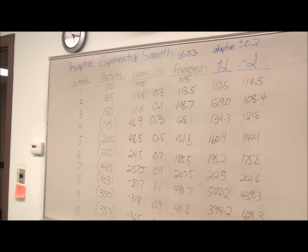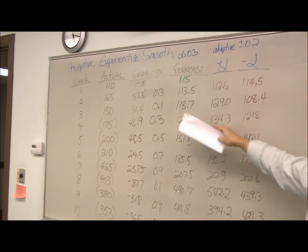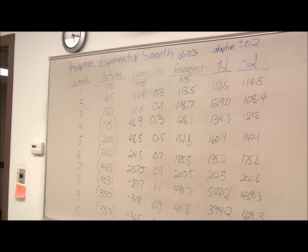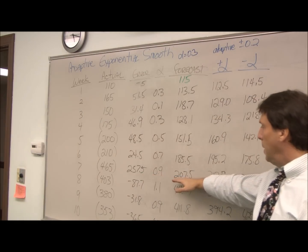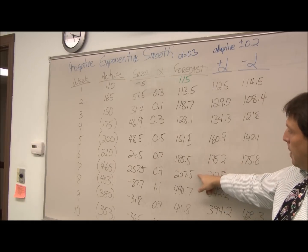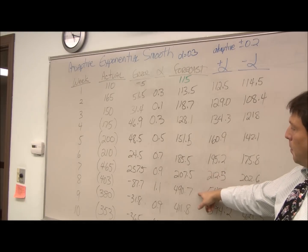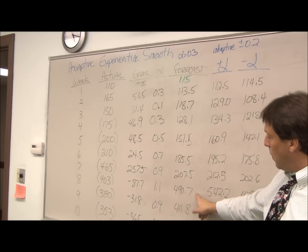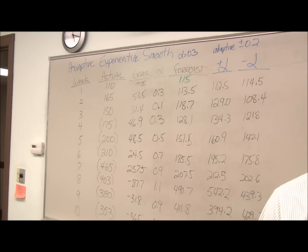Here's our final solution with all our forecasted values, all our alphas, all our plus and minus alphas, and the different alphas we use to calculate it. If you were to plot this out, you'd notice that because of the smoothing there's a slight delay. As we have these big gains up here—you notice our actual jumped up to 465—it took our forecast another period to get up that high. And then when it started dropping again it didn't drop quite as fast. That's one of the things the smoothing factor will do for you.